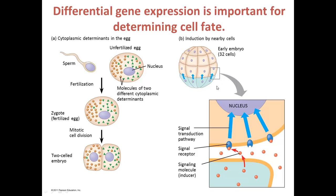There has to be differential gene expression in the early embryo because nearby cells can send signals to adjacent cells that lead to very important processes such as gastrulation, in which we form the three germ layers: the ectoderm, the mesoderm, and the endoderm.